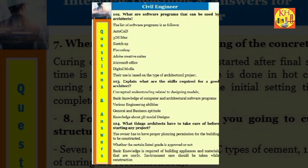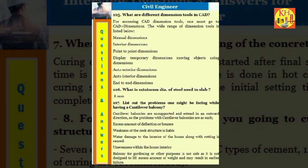Question 105: What things architects have to take care of before starting any project? The owner has to have proper planning permission for the building to be constructed. Whether the certain listed grade is approved or not. Basic knowledge is required of building appliances and materials that are costly. Environment care should be taken while construction. Question 106: What are different dimension tools in CAD? For accessing CAD dimension tools, one must go to CAD and GT Dimensions. The wide range of dimension tools is listed below: Manual dimensions, Interior dimensions, Point to point dimensions, Display temporary dimensions, Moving objects using dimensions, Auto exterior dimensions, Auto interior dimensions, End to end dimensions.